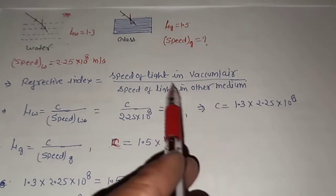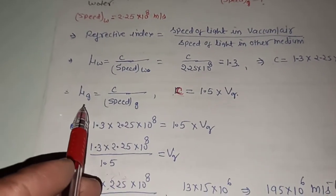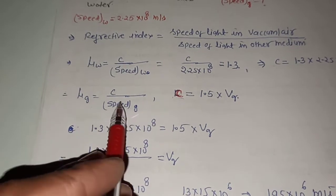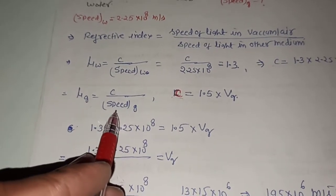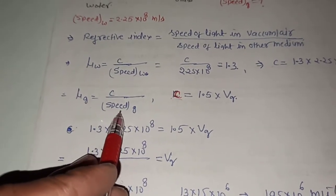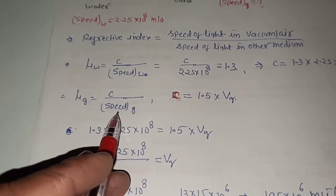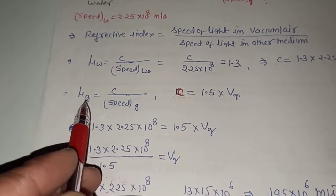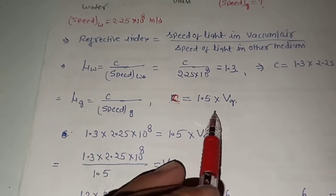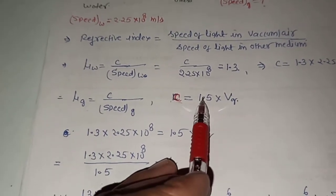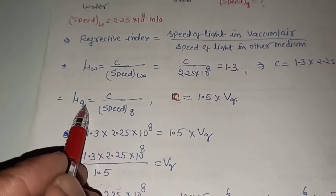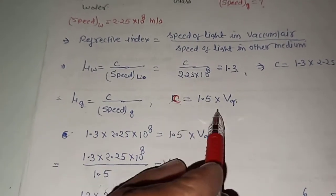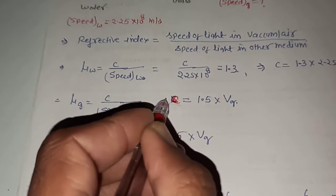Using the same formula to find the speed of light in glass: refractive index of glass equals C divided by speed of light in glass. The refractive index of glass is given as 1.5. Multiplying across, we get C expressed in terms of the speed of light in glass.